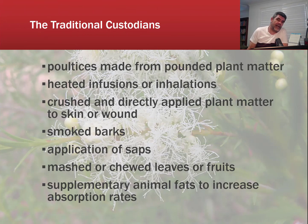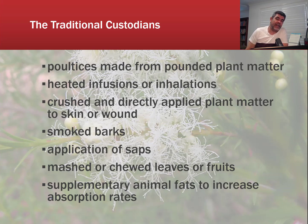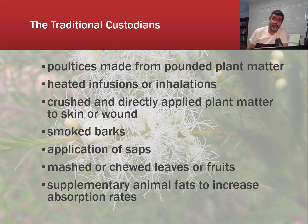The traditional custodians of the Australian lands have used the land and its produce for thousands of years. They have a very good understanding of exactly what the land can provide and how to use it to its optimum level. We see applications of the use of plants and animals in a range of different situations to treat all sorts of different conditions, from grazes and cuts to more serious health issues. This is by no means an extensive list, but it covers some of the different ways in which the indigenous nations have used materials from the land to help treat the sick.